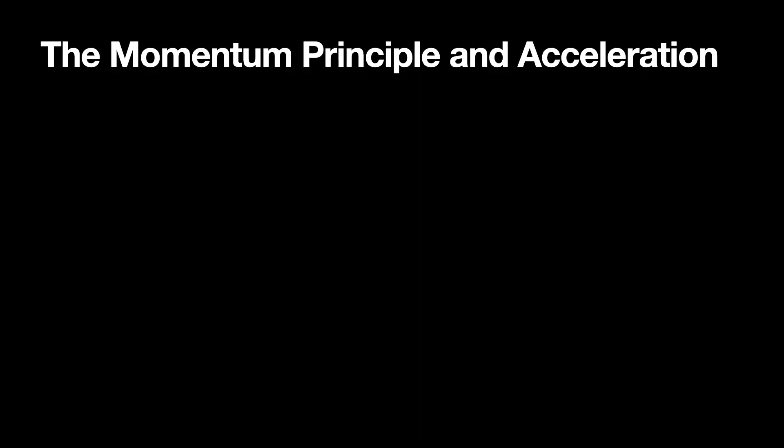The first thing is the momentum principle. The total force on an object — the net vector force — is equal to the rate of change of momentum, which I can write as delta P over delta T for some short time interval. P is the momentum, and we can write that as the product of mass and velocity.